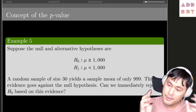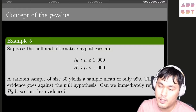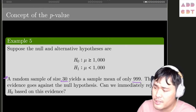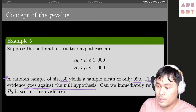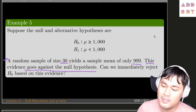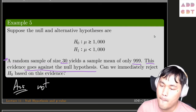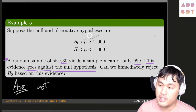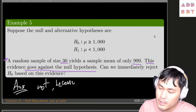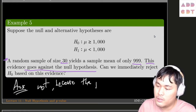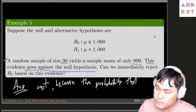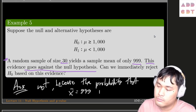After we settle this hypothesis, we collect a sample of size 30, and we get the sample mean of 999. Of course, this goes against the hypothesis. The question is: can we immediately reject the null hypothesis based on this evidence? We actually discussed that already — the answer is no. We cannot reject the hypothesis right away because maybe it's close enough, because the probability that the sample mean is 999 is not zero.